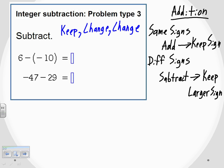So let's start with the first one: 6 minus negative 10. This is our subtraction problem, but using keep change change, we will turn it into an addition problem. The first part says keep — so we keep the sign of the first number. The 6 was a positive, it's still a positive. Then we change the operation from subtraction into addition. And in order to do that, we also change the last number from a negative into a positive — a positive 10.